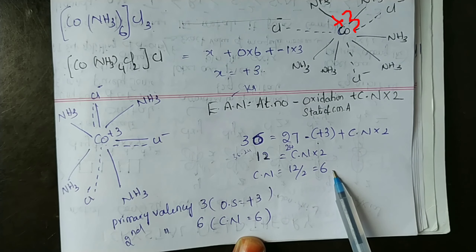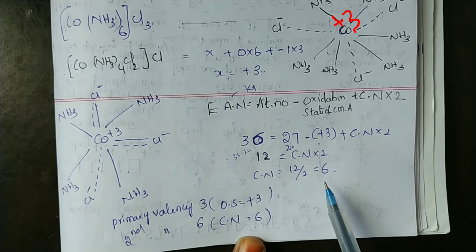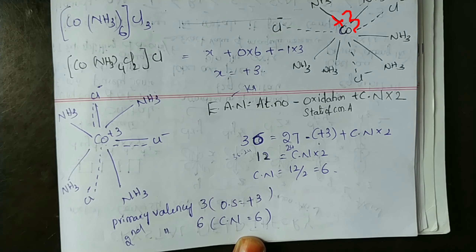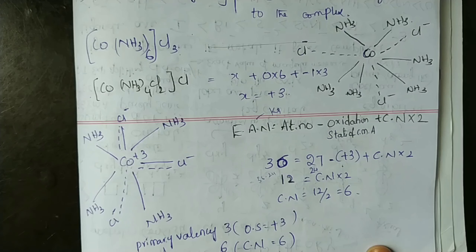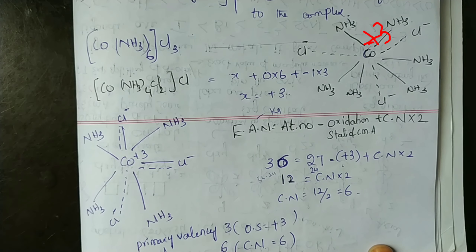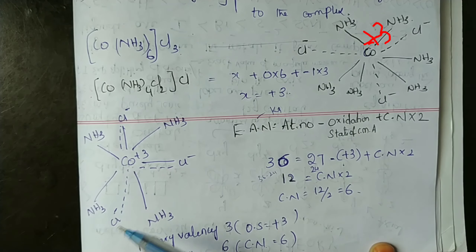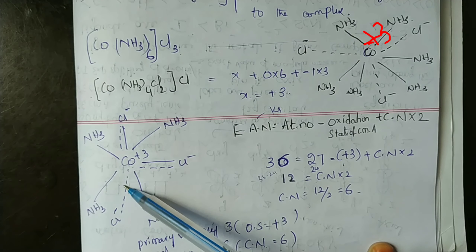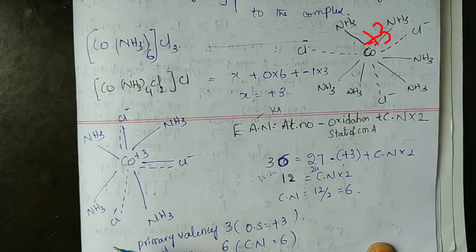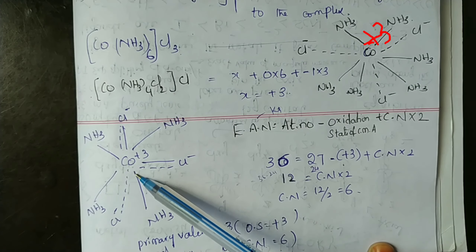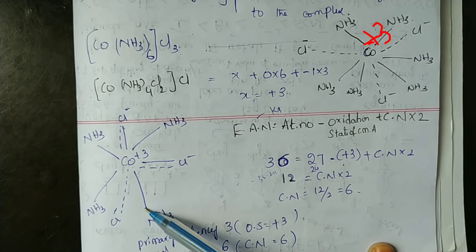So, 6 is the coordination number of cobalt. Primary valency is denoted by dotted lines and secondary valency is denoted by thick lines.